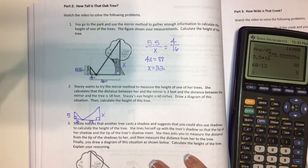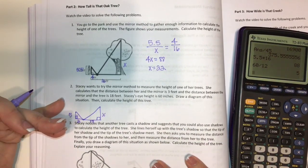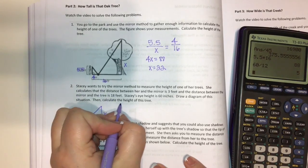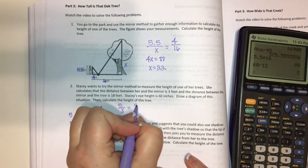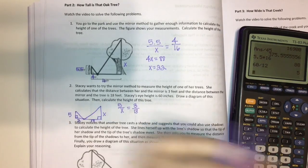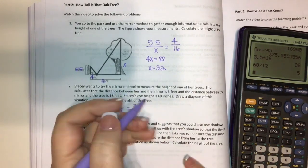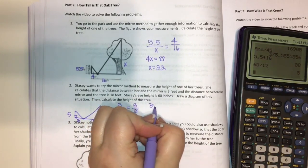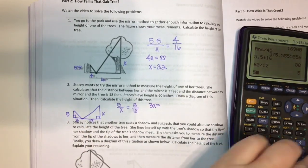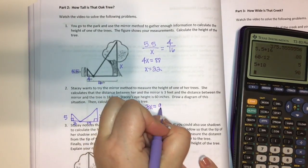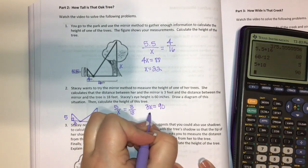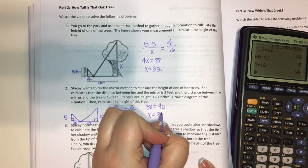So this is exactly like the one before, we just have different numbers. So I'm going to do five over X equals three over 18. I'm going to cross multiply. So I get three X equals five times 18, which is 90. And then when I divide the height of the tree will be 30 feet.